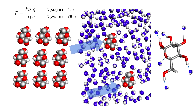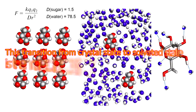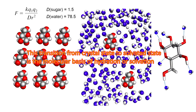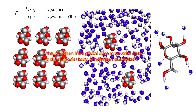Individual sugar molecules leave the crystals and make hydrogen bonds with water. You can see how the glucose molecule has 5 hydrogen bond donors and 1 acceptor. This transition from the crystal state to the solvated state is the molecular basis of hydration, or solvation, of the hydrophilic molecules.